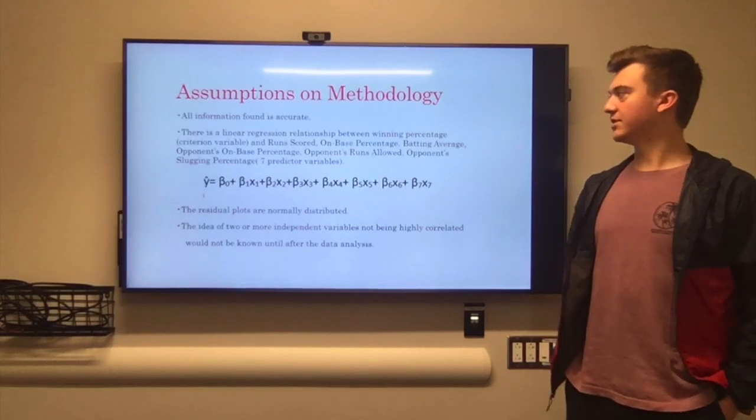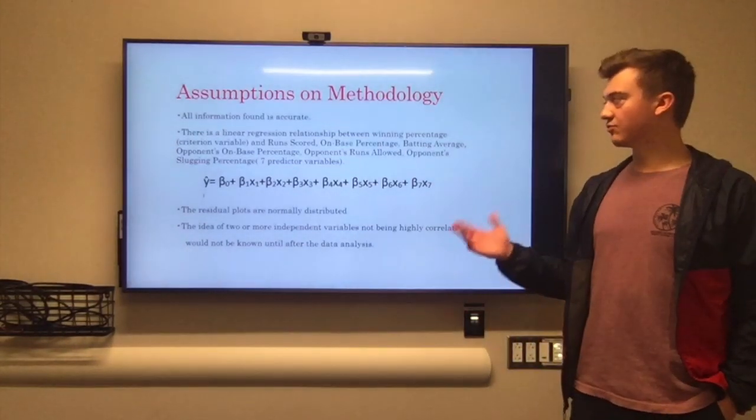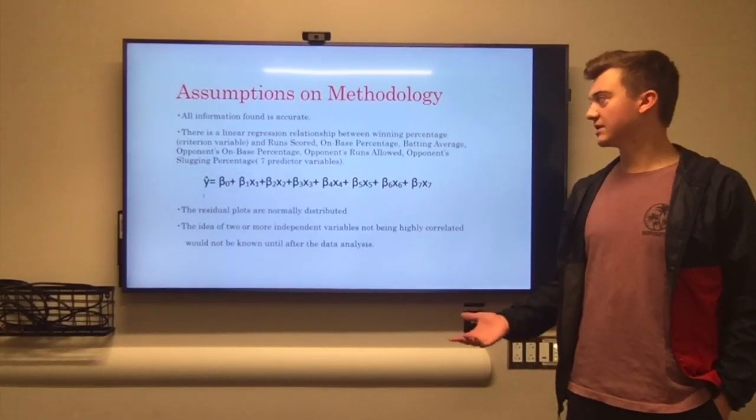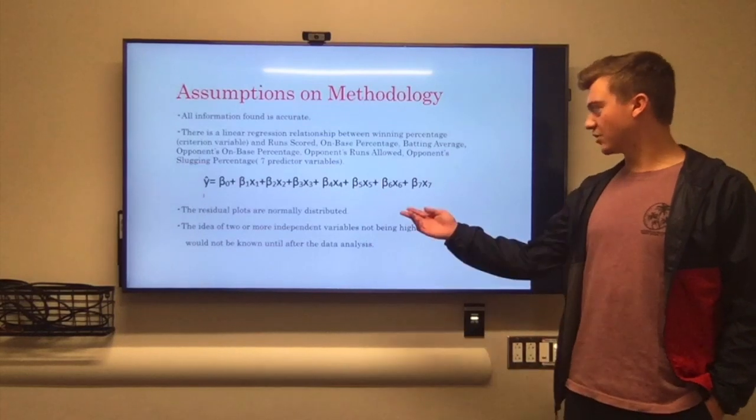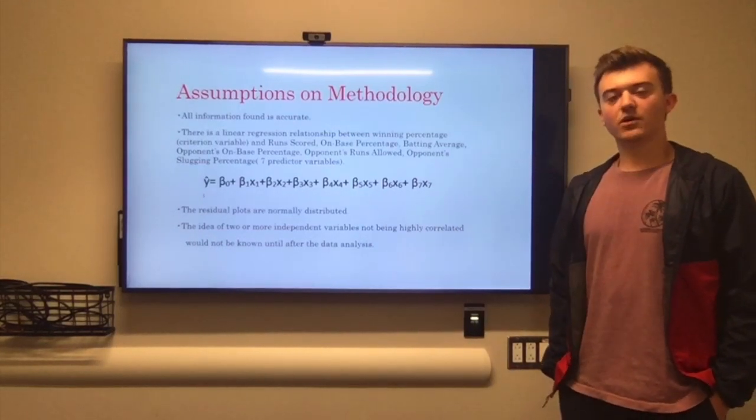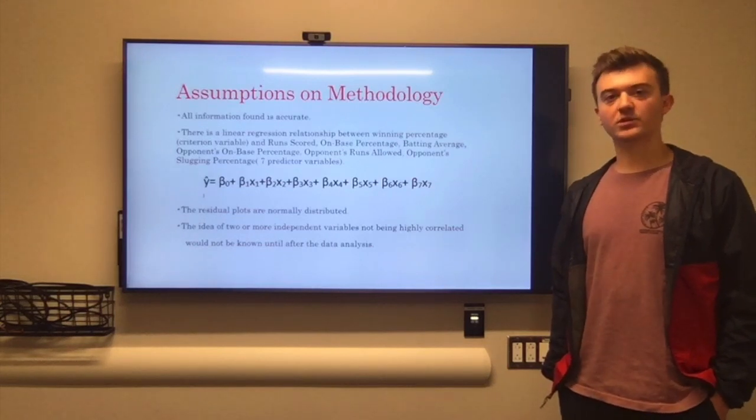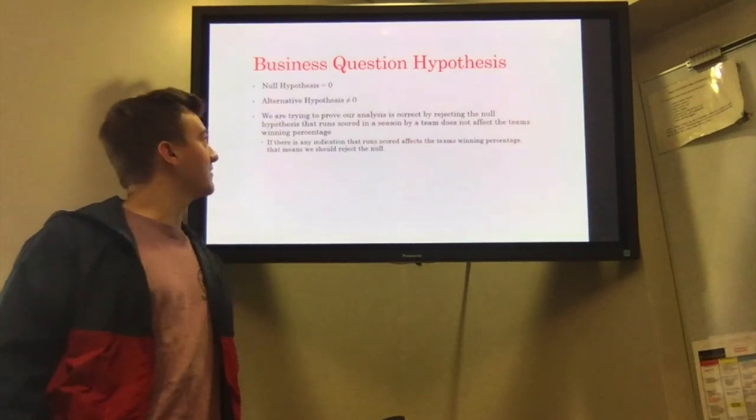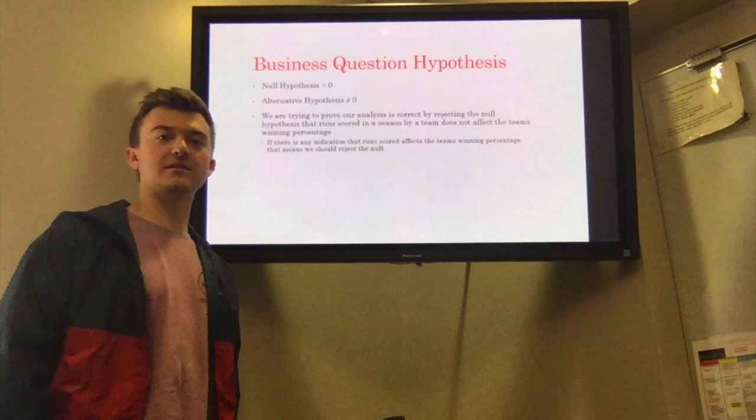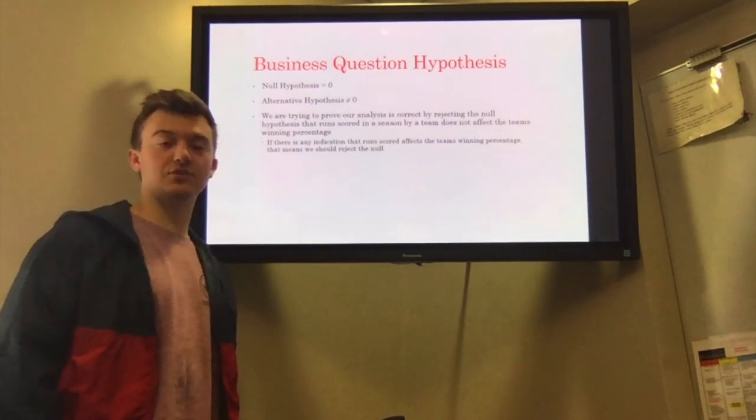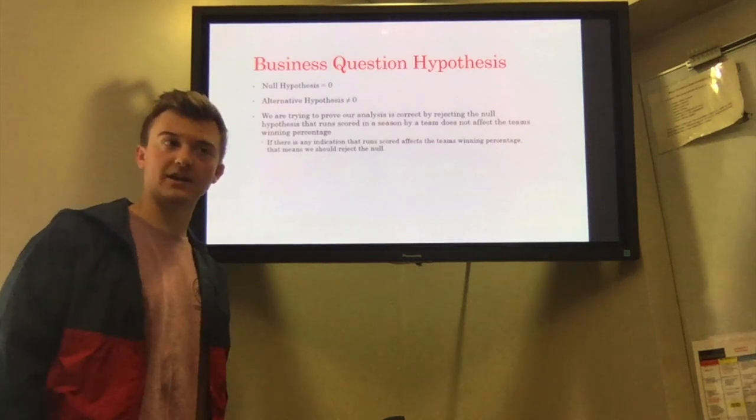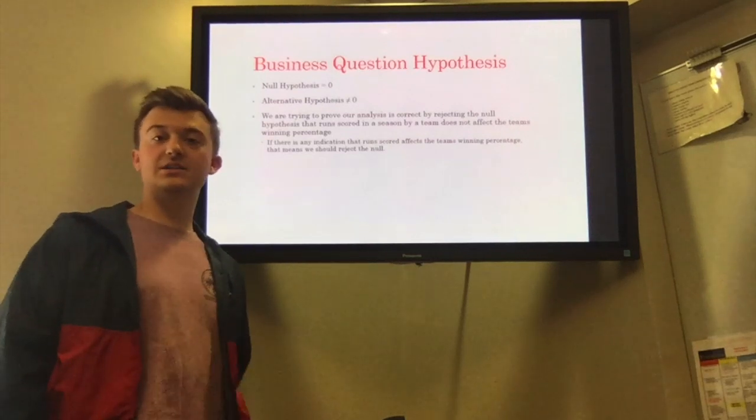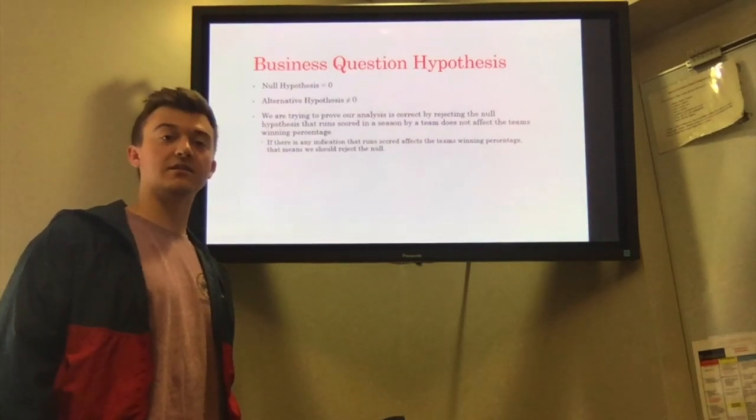We are assuming that there is a linear regression relationship between the variables run scored, on base percentage, batting average, opponents on base percentage, opponents runs allowed, and opponents slugging percentage. We're going to use this equation to test the seven variables. We are also predicting that the residual plots will be normally distributed. Our null hypothesis is that run score does not affect the winning percentage of a team, and our alternative hypothesis is that run scores do affect winning percentage of a team. We're going to try to reject the null hypothesis in this situation.